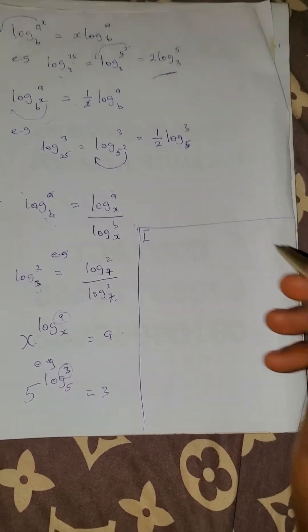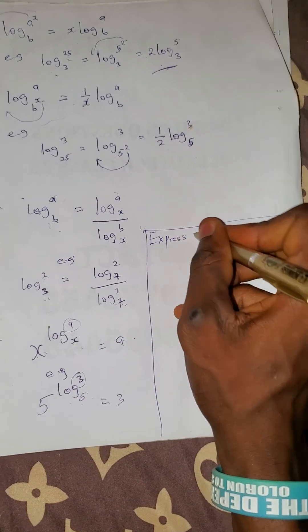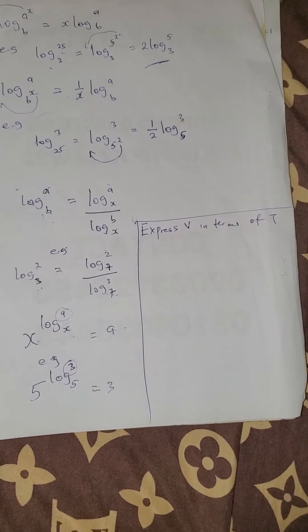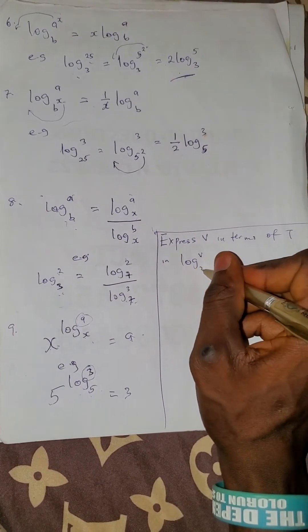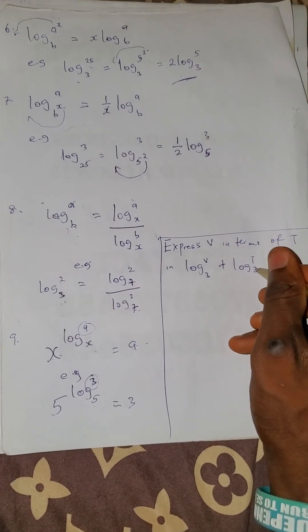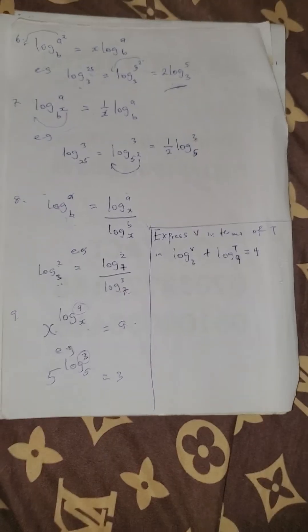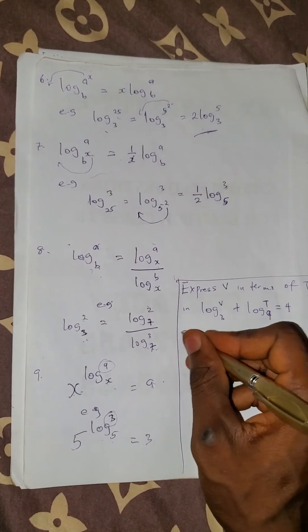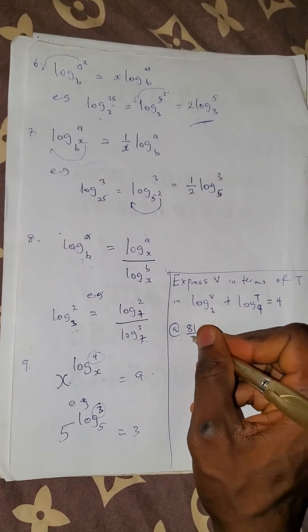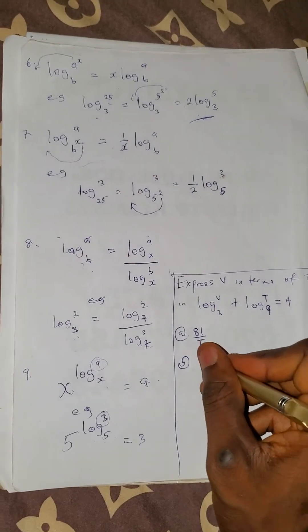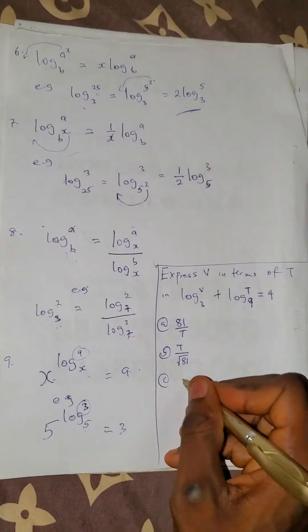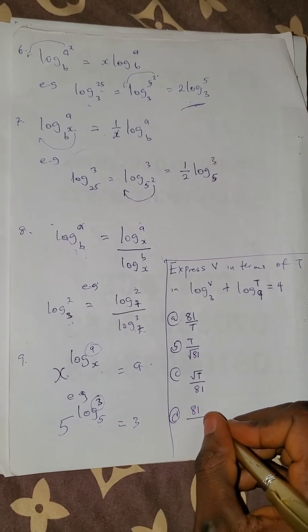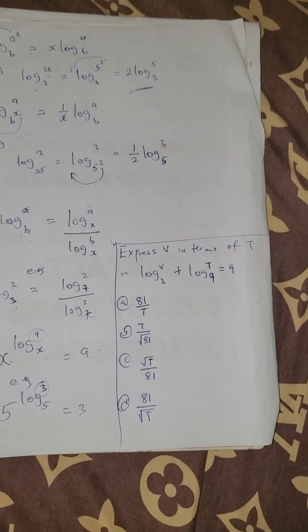Now let me give you an exercise. The question says: express v in terms of t, given that log v base 3 plus log t base 9 equals 4.